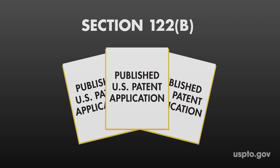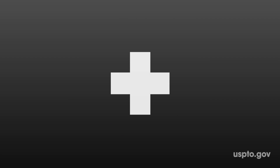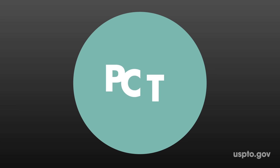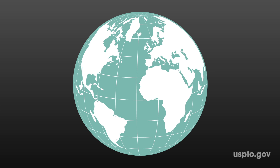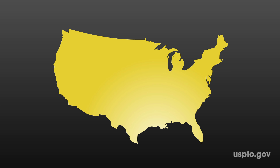But there's another application type to look at as well. It also includes applications published under the Patent Cooperation Treaty, or PCT. The PCT is a way for inventors all over the world to file for patent protection in multiple countries. If an application has been filed under the PCT and designates the United States as a country where patent protection will be sought, then that application can be used as prior art.